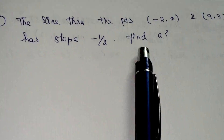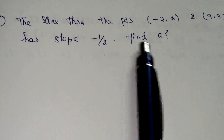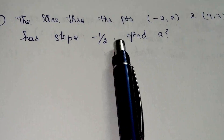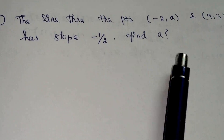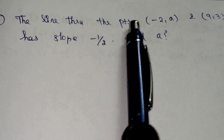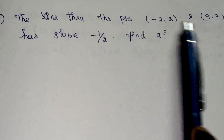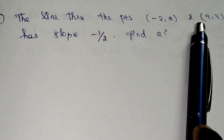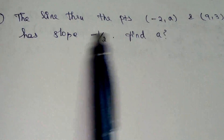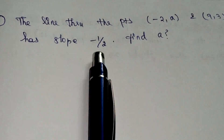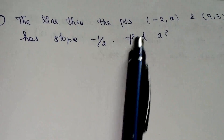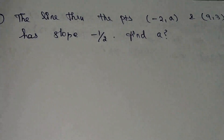Then find the A value. Very very simple sum. You already know what to use in the slope formula. You will get the two coordinates, and using slope m, we will get the A value.